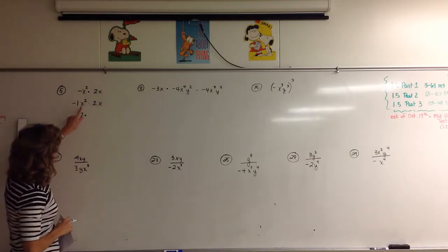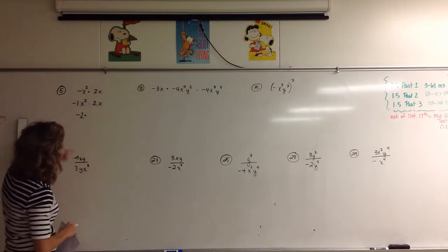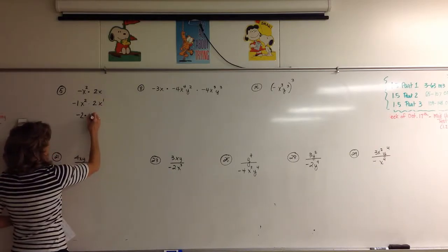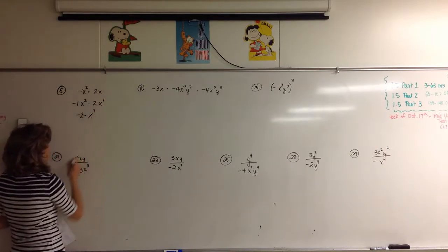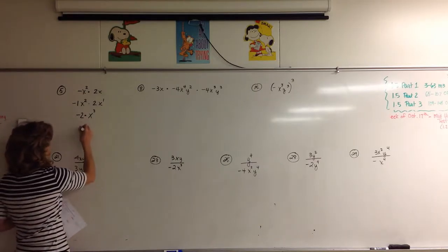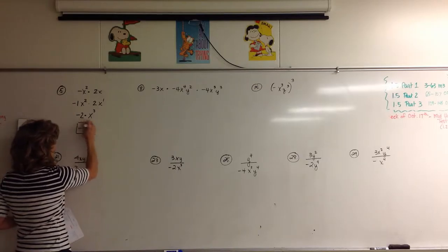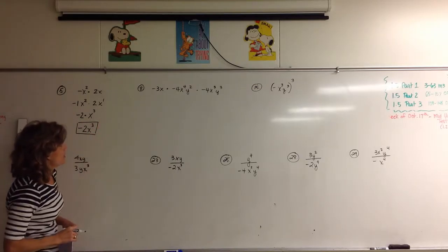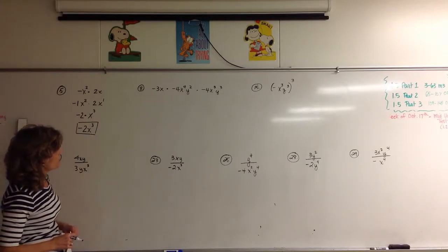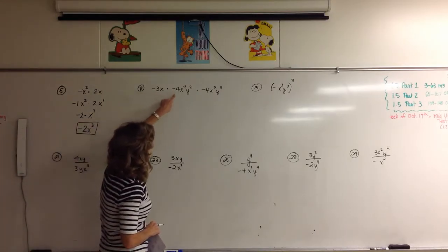Negative times a positive — one negative sign — what kind of answer do I get? Negative two. So negative two, and then I've got to worry about x squared times x. I've got two x's multiplied here and one more x here. All I've got to do is add two plus an understood one to get negative two times x to the third. We added exponents.